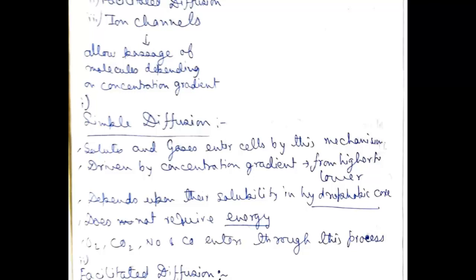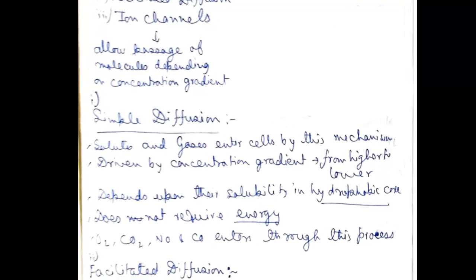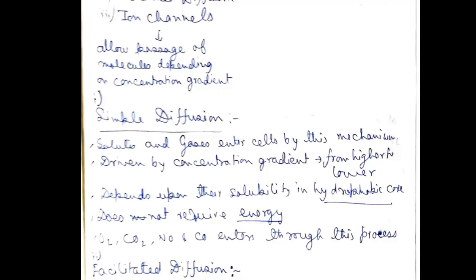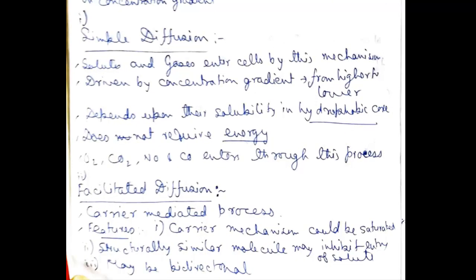Passive transport is of three types: simple diffusion, facilitated diffusion, and ion channels. Ion channels allow passage of molecules depending upon the concentration gradient. Simple diffusion — solutes and gases enter cells by this mechanism. It depends upon the concentration gradient and solubility in the hydrophobic core. It does not require energy and is a slow process. Oxygen, carbon dioxide, nitric oxide, carbon monoxide, and most gases enter through this process.